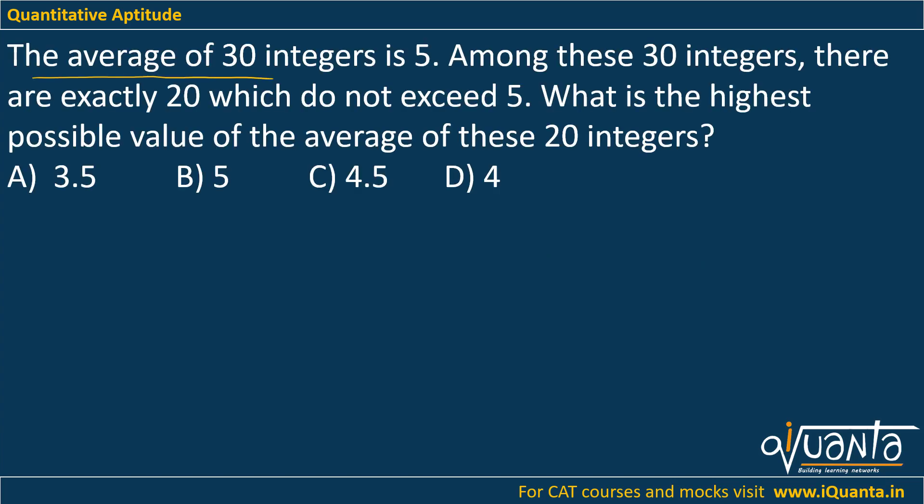The question is: the average of 30 integers is 5. Among these 30 integers, there are exactly 20 which do not exceed 5. What is the highest possible value of the average of these 20 integers?